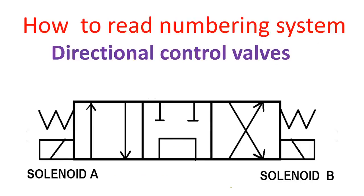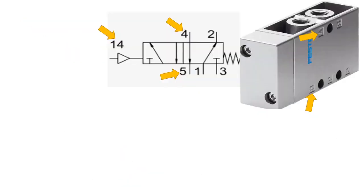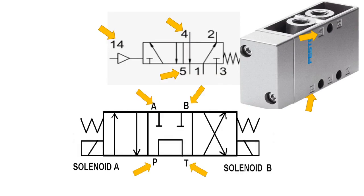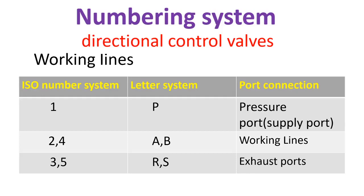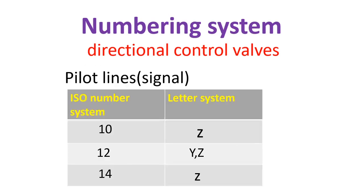Our next topic is how to read the numbering system of directional control valves. If your directional control valve uses numbers or letters for their port designations, here is the equivalent: number one and letter P is the pressure or supply port; numbers two and four, or letters A or B, are working lines; numbers three and five, or letters R and S, are exhaust ports. For pilot lines or signal: 10 is equivalent to Z, 12 is equivalent to Y or Z, and 14 is equivalent to Z.